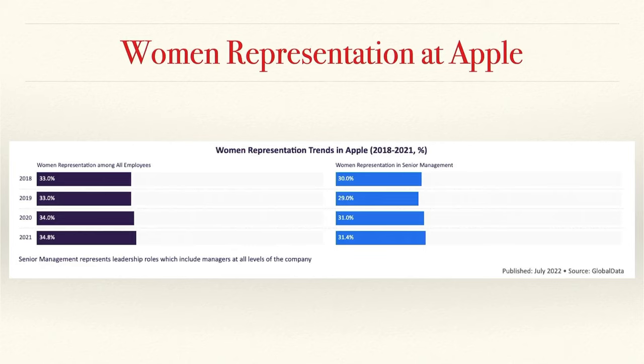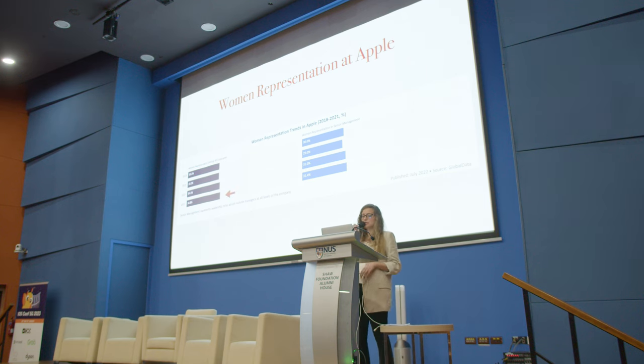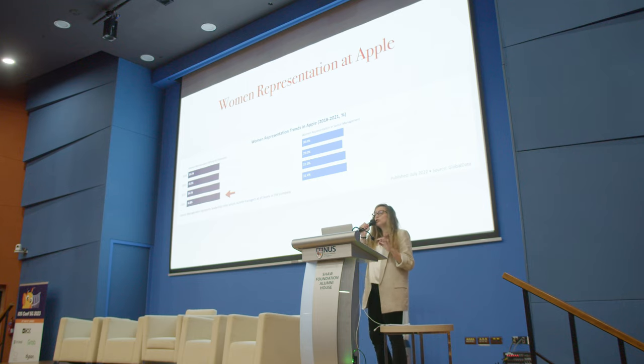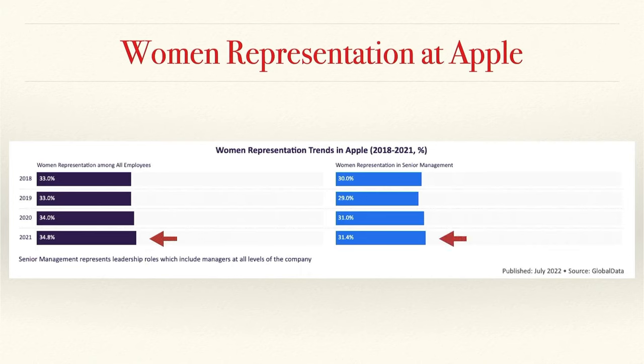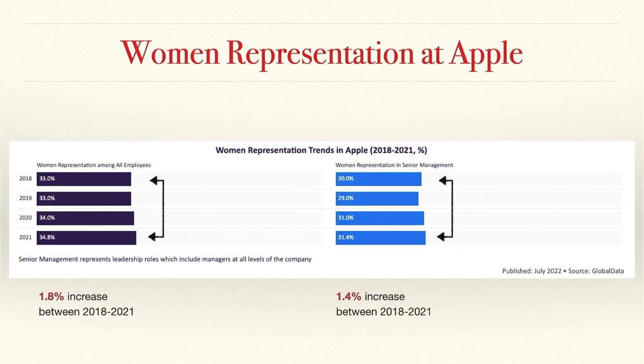This is a graph published by Global Data showing women's representation at Apple. On the right column, we see women's representation in senior management, and on the left, among all employees. In 2021, women's representation among all Apple employees is 34.8%, and among senior management at Apple is 31.4%. Over four years, there has been only a 1.8% increase overall and 1.4% increase in senior management — relatively low, especially considering the many initiatives Apple has taken to increase diversity.